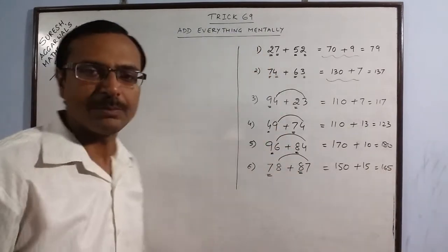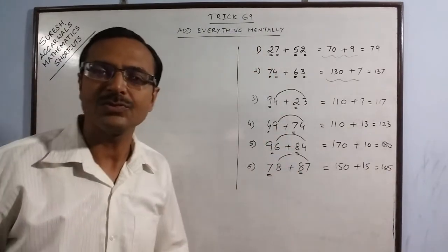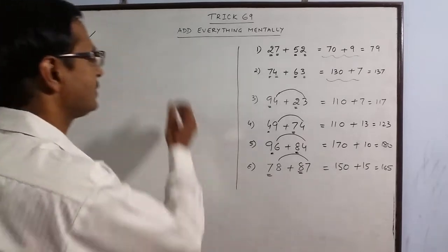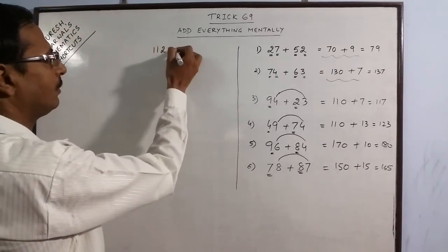Likewise, you can add 2 digit numbers. Now let us take some examples in which we have 3 digit numbers. Say, 112 plus 84.